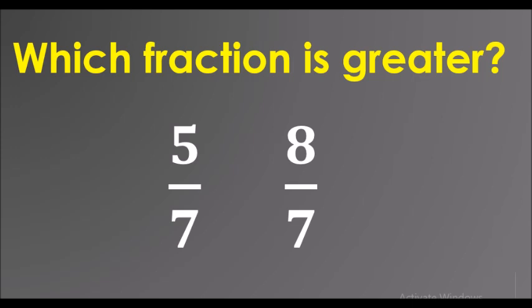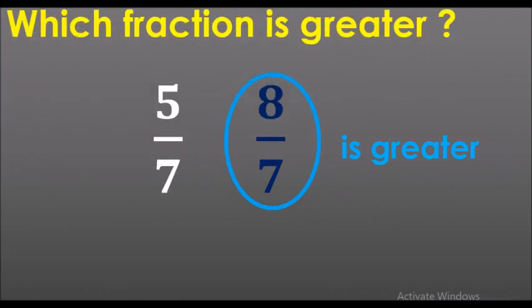This question is asking which fraction is greater. Now, since the two denominators are the same, it is easier for us to find out the bigger number. The bigger number in these two fractions is 8. 5 and 8, which one do you think is greater? 8. So 8 upon 7 is the greater fraction.